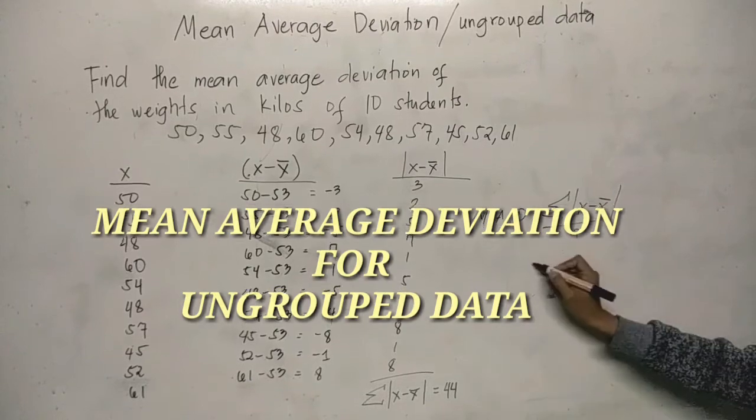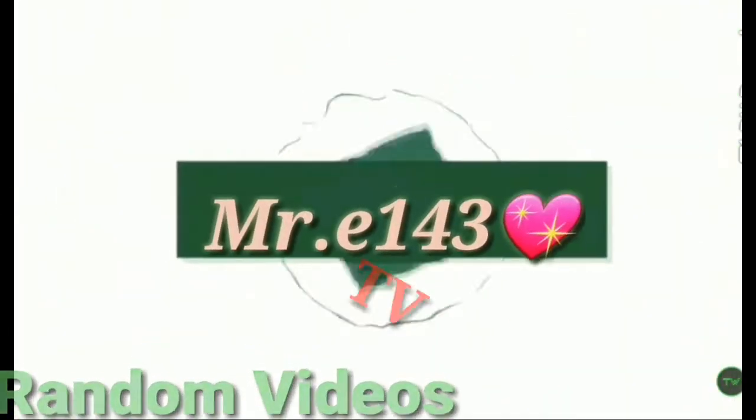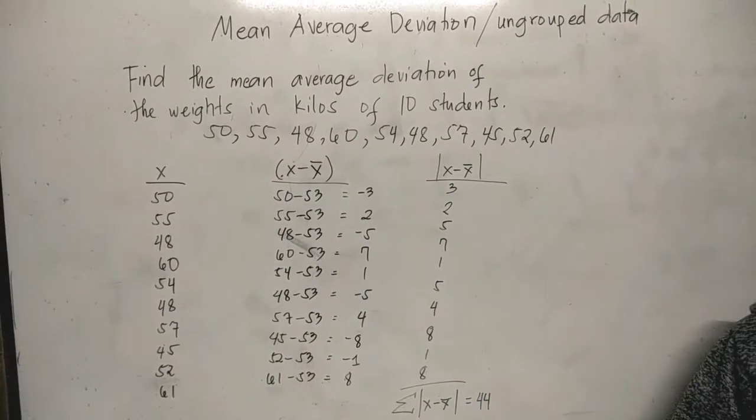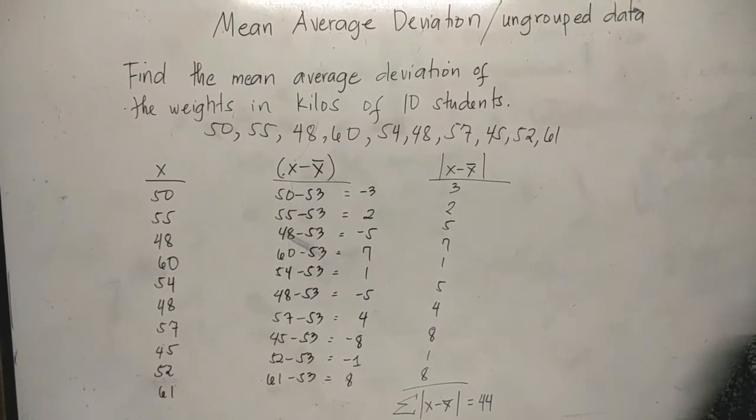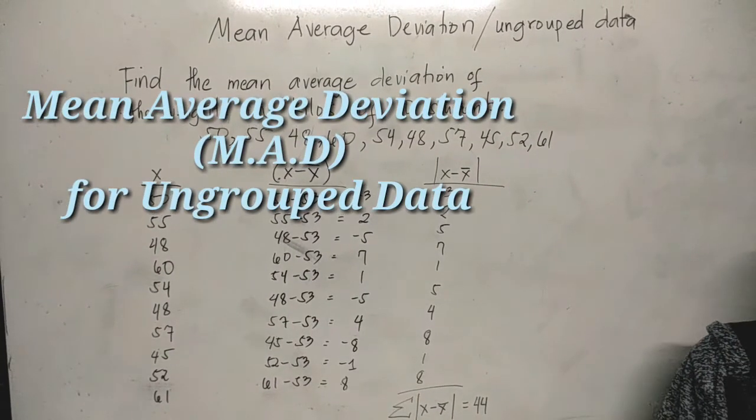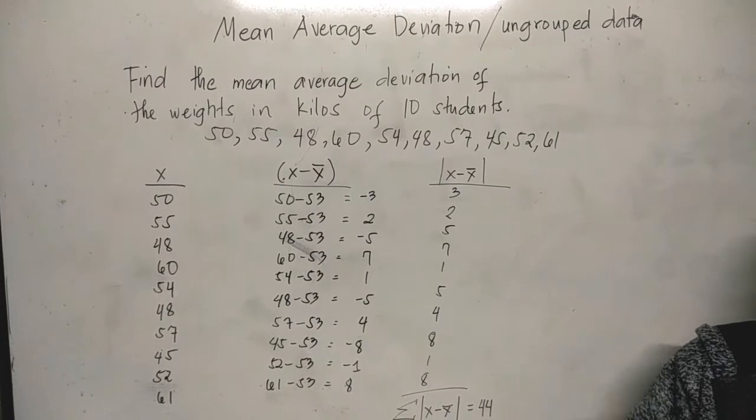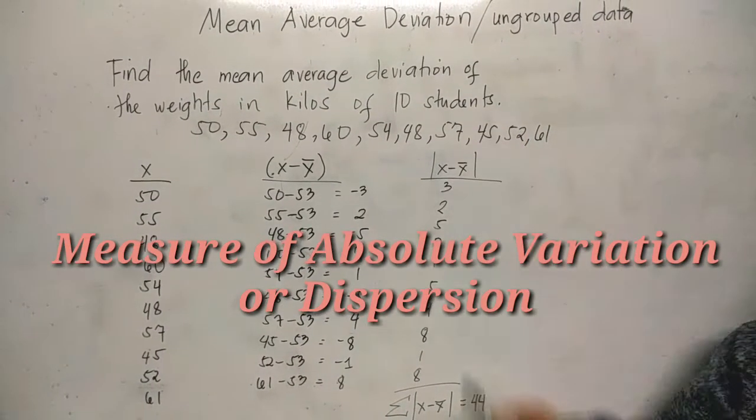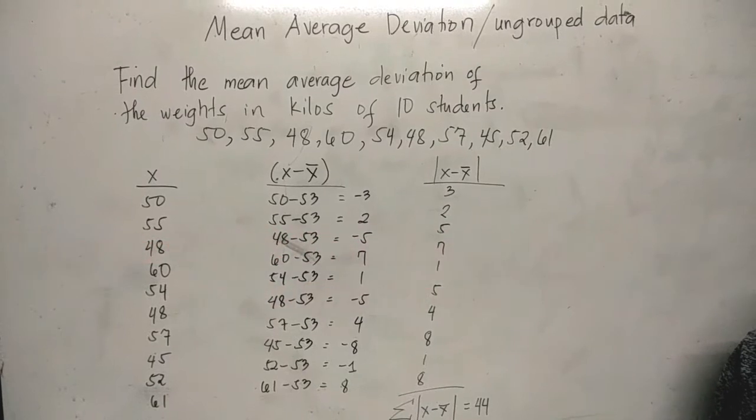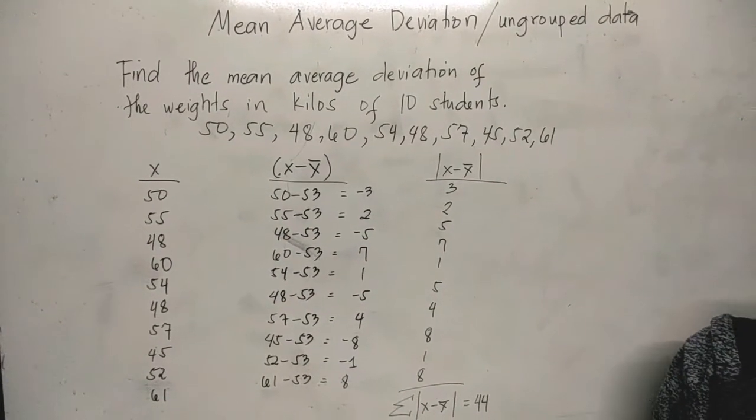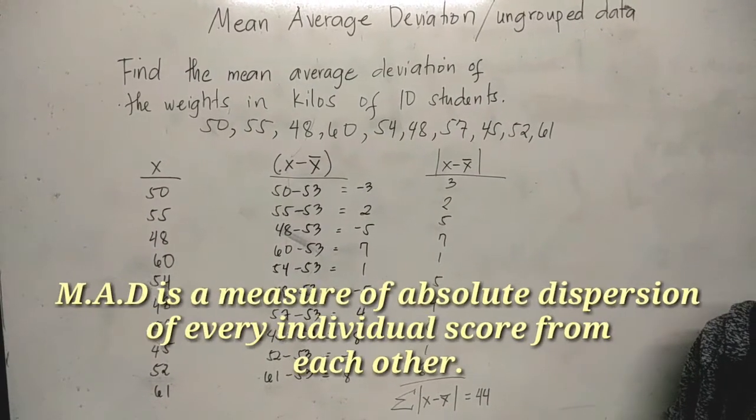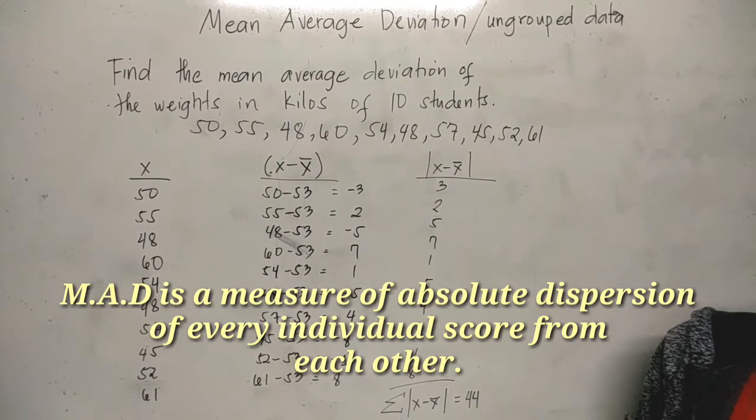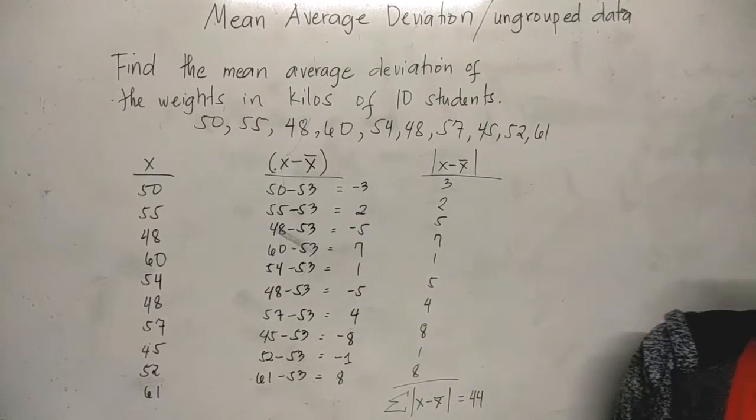So just some of the values. We have the mean average deviation for ungrouped data. This is one of the ways in finding the measure of absolute variation or dispersion. So this is another way. Mean average deviation or MAD is a measure of absolute dispersion of every individual score from each other. So as not to encourage pairwise subtraction process, a common source called the mean of the data is used.